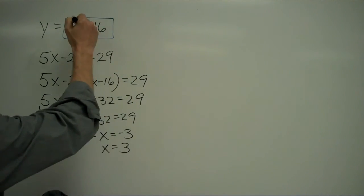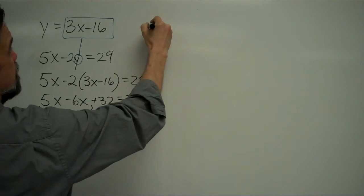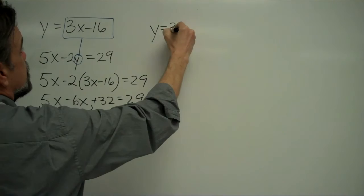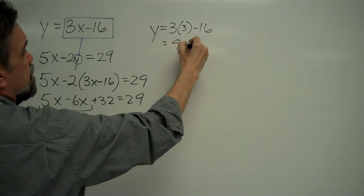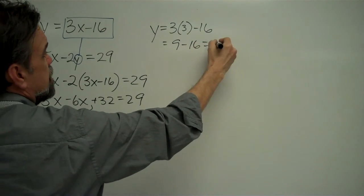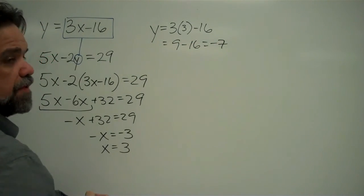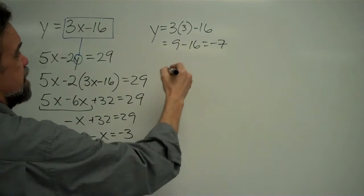So now I take my x equals 3, I replace x with 3, and I get y equals 3 times 3 minus 16, which is 9 minus 16, which is negative 7.